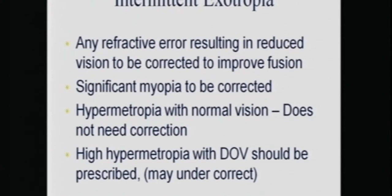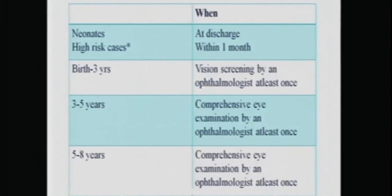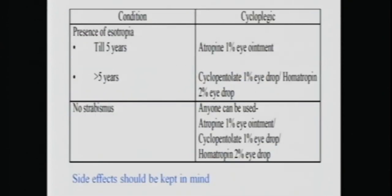This is a modification of the AO guidelines, shown in red, and we recently established suggested guidelines for Indian patients and children, which was released at the inauguration. These guidelines tell us the cutoff for when to start giving glasses and when to refract. It is very important that the moment there is any misalignment or any difference in the Bruckner's reflex, a refraction and prescription should be given. By three years, a comprehensive eye exam by an ophthalmologist at least once is essential. Atropine is preferred for young children and those with esotropia; cyclopentolate can be an alternative if no strabismus is present.